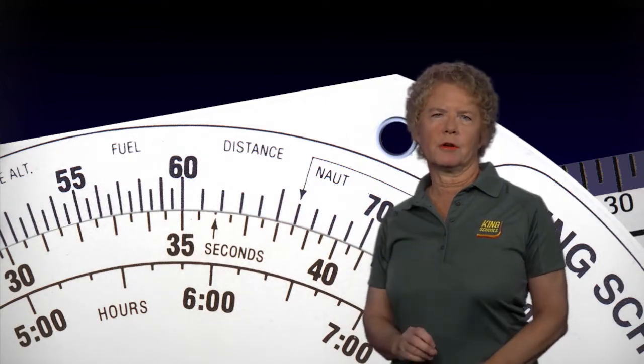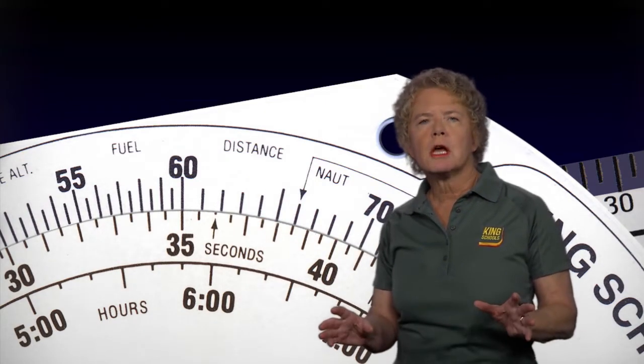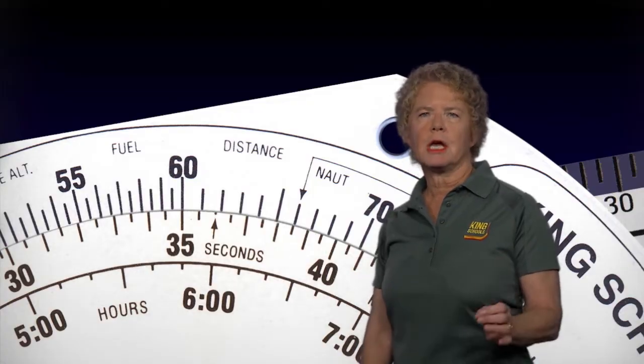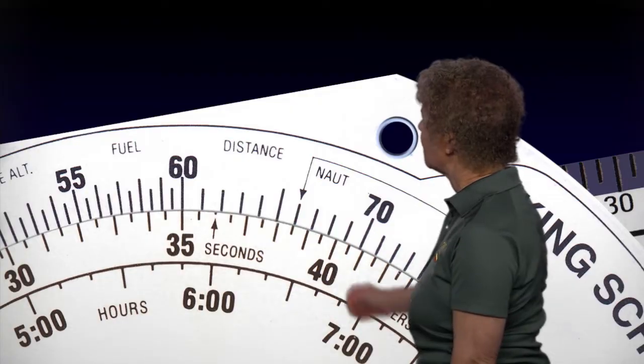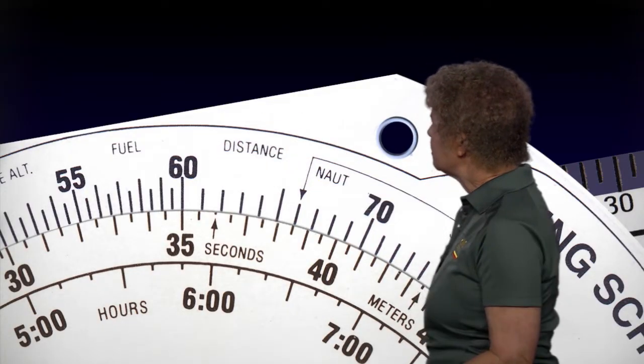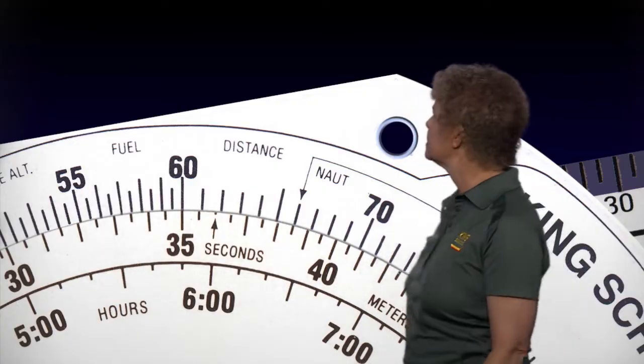So let's take a look at that front side and turn that flight computer so that the 60 on the outer scale is up towards the top. So here's our 60 on the outer scale. And notice, just to the right of the 60,